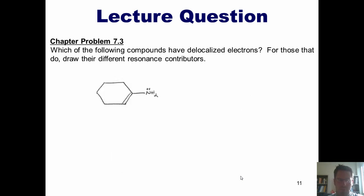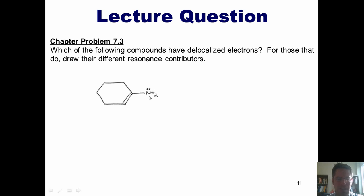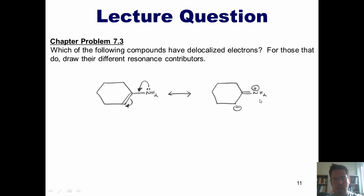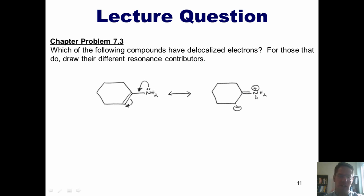Let's take a look at this next example. Can these lone pairs somehow push in and form a resonance contributor involving these pi electrons? In the previous example, the oxygen lone pairs were too far removed from the double bond. In this case, however, the nitrogen lone pairs are coming immediately off one of the two carbons participating in the double bond. Thus, if these lone pairs come in to form a nitrogen-carbon double bond, pushing these two pi electrons up and onto this carbon, I would get this structure. The nitrogen now has a positive charge because it has four bonds — sharing more electrons than nitrogen likes to in a neutral state. And the carbon that just gained these two electrons now gets a negative charge.